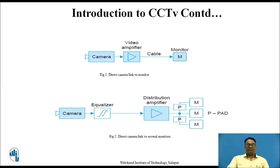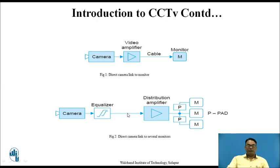Here you can see the block diagram for two different links. In the first link, the camera is connected directly to the receiver or monitor — this is the simplest link. In the second, the camera is connected to several receivers or monitors via a video amplifier, whose output is carried through an RF cable to the monitor. The basic difference between these two diagrams is that in the second, after the camera we use an equalizer, then the output of the equalizer is given to a distribution amplifier, which amplifies the signals and distributes them to different monitors depending on receiving capacity.